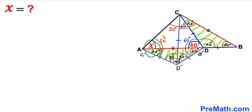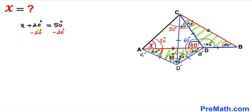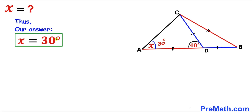The sum of angles x plus 20 degrees equals 50 degrees. So x plus 20 degrees equals 50 degrees. Subtracting 20 degrees from both sides, our angle x turns out to be 30 degrees. After all the manipulation and calculations, our angle X equals 30 degrees, and that is our final answer.